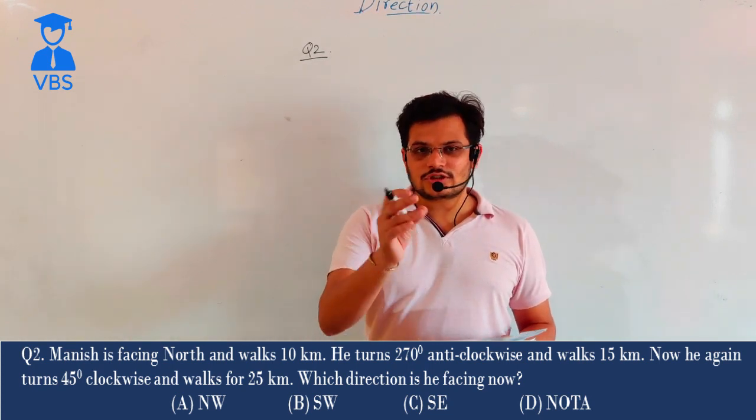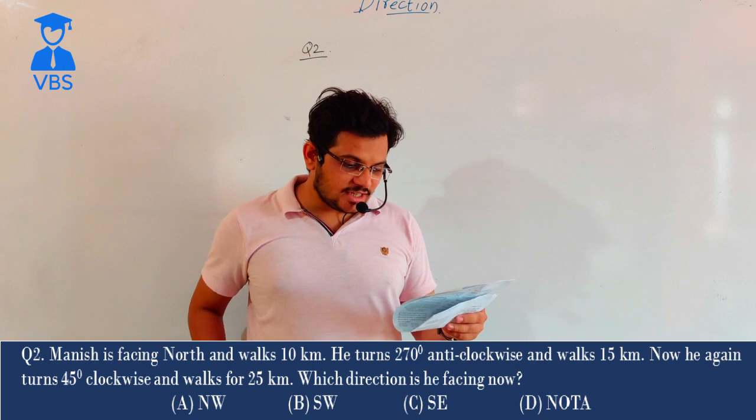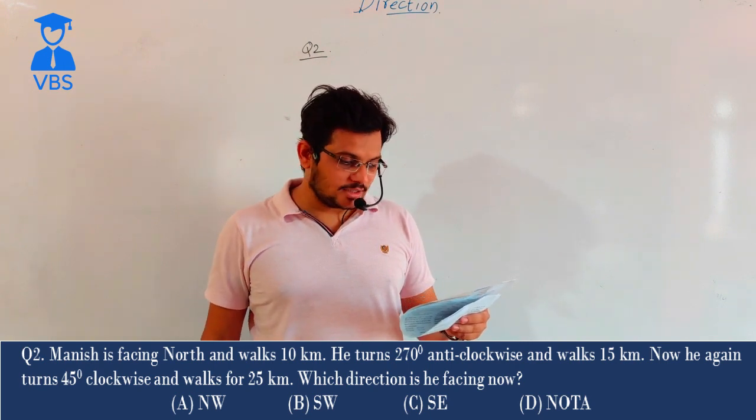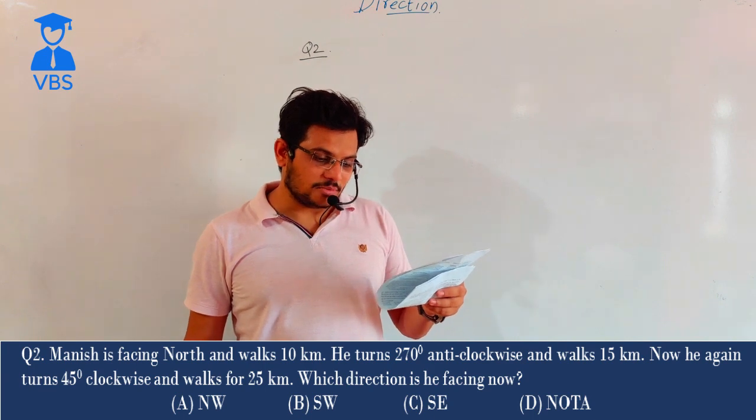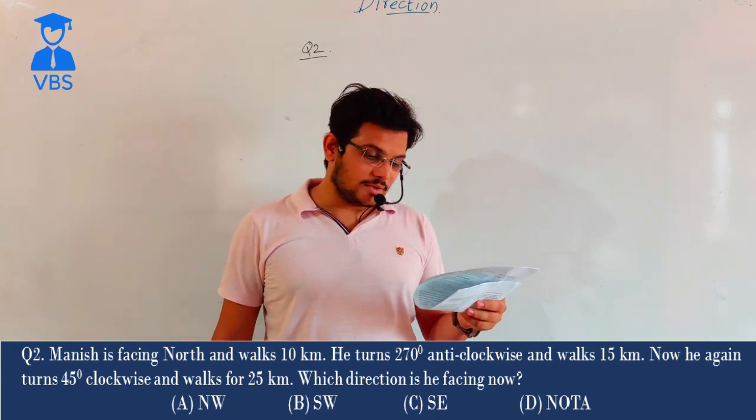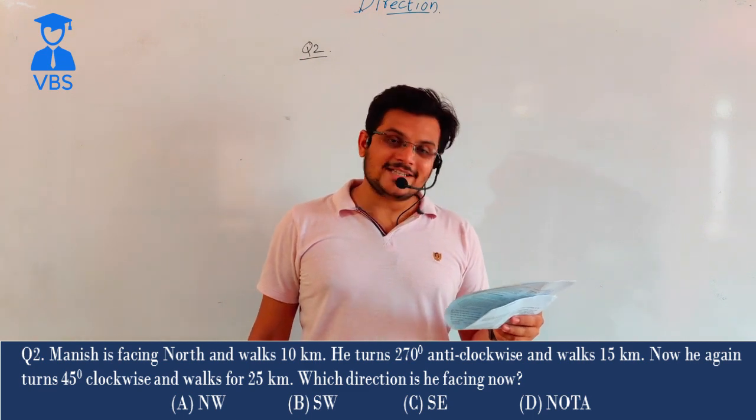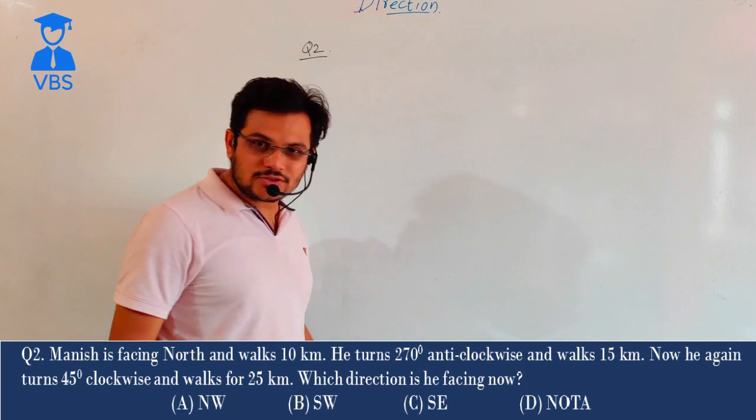How can you read question number 2? Question number 2. Manish is facing north and walks 10 km. He turns 270 degrees anticlockwise and walks 15 km. Now he again turns 45 degrees clockwise and walks 25 km. Which direction is he facing now?